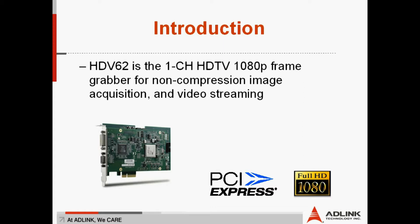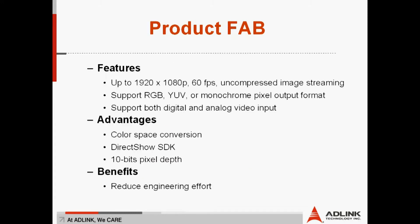The HDV62 is a single-channel HDTV 1080-pixel frame grabber. It can acquire uncompressed image formats or be used in video streaming. One of its main features is that it supports up to 1080 pixels at 60 frames per second of uncompressed image.